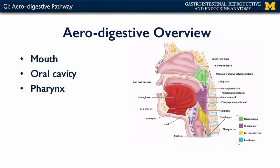Let's talk about the aerodigestive pathway with a special emphasis on the digestive portion of this pathway. The aerodigestive pathway consists of all of the structures that are common between the respiratory and the digestive systems. These would include the mouth, the oral or buccal cavity, and the pharynx, or colloquially the throat.